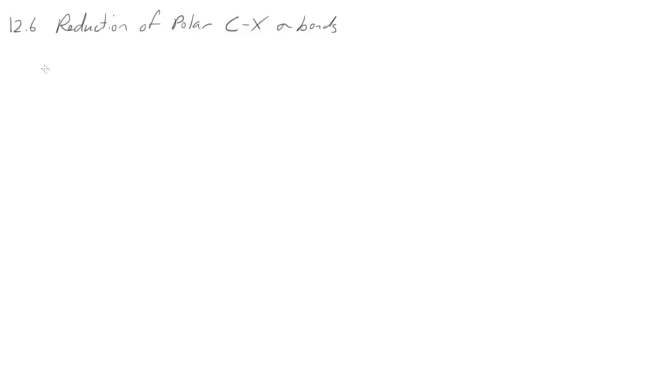In section 12.6 we'll look at reduction of polar carbon to halogen bonds, in particular carbon-halogen sigma bonds.